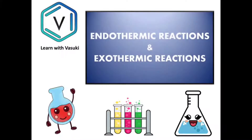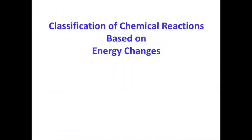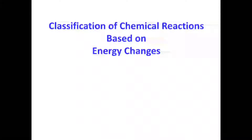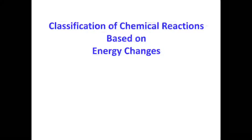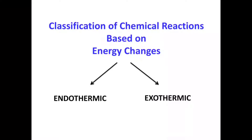Welcome, dear students. In this video I'm going to teach you endothermic reactions and exothermic reactions. In general, chemical reactions are classified based on the energy changes involved during the reaction. The two main classifications are endothermic and exothermic reactions. 'Endo' means internal or within, and 'thermic' means heat — so heat is taken in during an endothermic reaction. 'Exo' means giving out, so during an exothermic reaction, heat is given out.